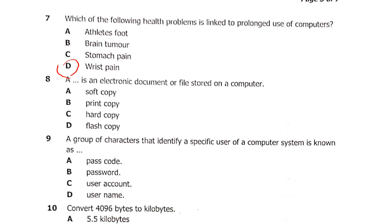Question 8: a blank is an electronic document or file stored on a computer. Is it A: soft copy, B: print copy, C: hard copy, or D: flash copy? The answer is A — soft copy.